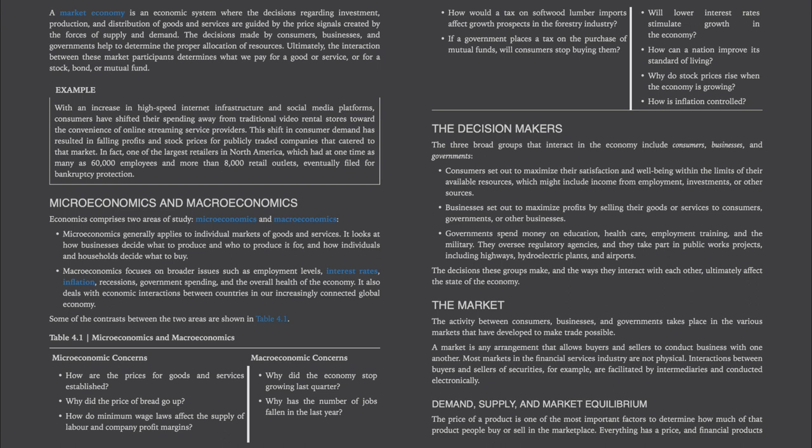Governments spend money on education, healthcare, employment training, and the military. They oversee regulatory agencies and they take part in public work projects, including highways, hydroelectric plants, and airports. The decisions these groups make and the ways they interact with each other ultimately affect the state of the economy.